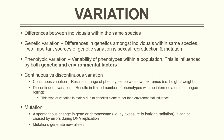Mutation is an important source of genetic variation. A spontaneous change in a gene or chromosome is what we call a mutation, and this can happen by exposure to ionizing radiation. It causes errors during DNA replication, and when that happens you get a change in a gene or chromosome. Mutations generate new alleles, which can be good or bad depending on what the environment is looking for.